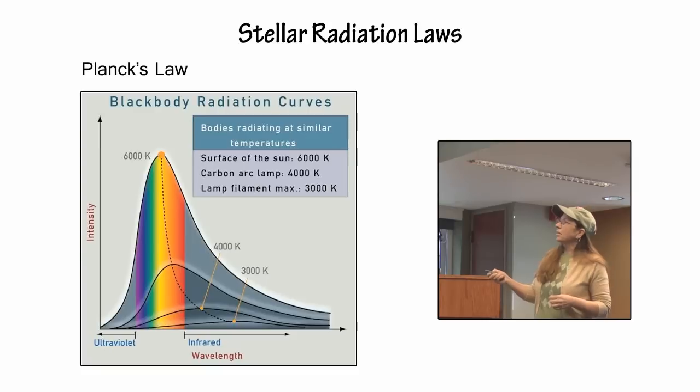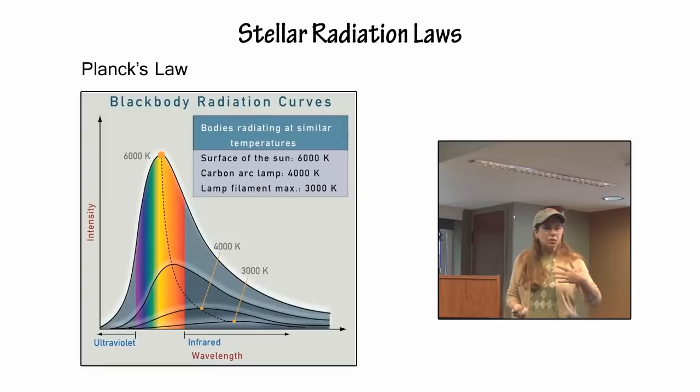Planck's law simply tells you that the hotter the star, the more energy it radiates - more energy at every single wavelength than a cooler star. You never see this bright line dip below the next coolest star down. It emits more energy at every single wavelength than a cooler star.